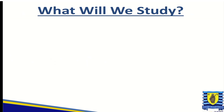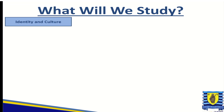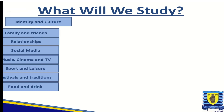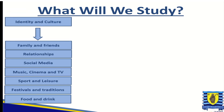Let's have a look at what we will be studying throughout the course. The first main topic is identity and culture, which includes family and friends, relationships, social media, music, cinema and TV, sport and leisure, festivals and traditions, and food and drink.